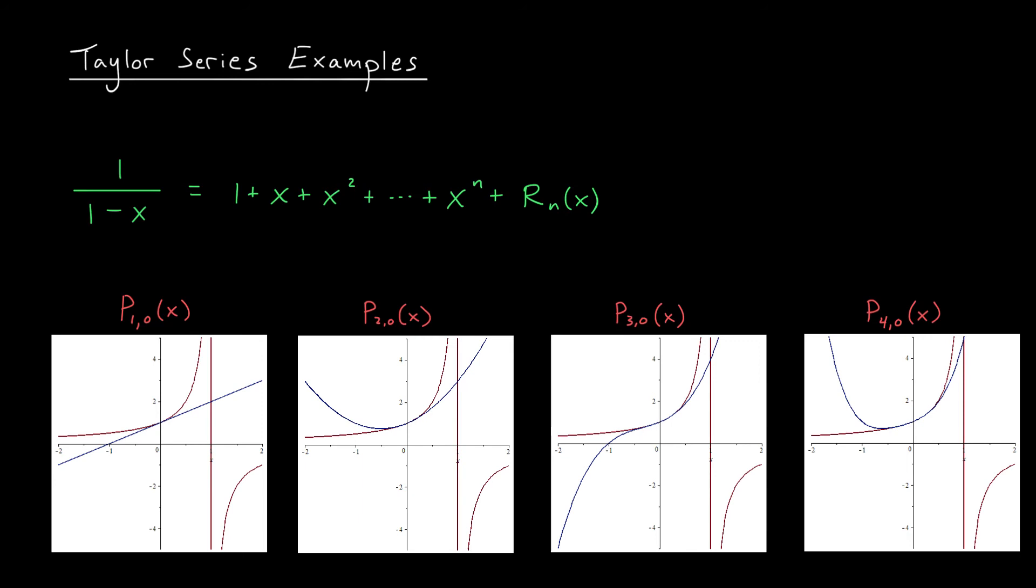For other values of x, though, the story is very different. The Maclaurin polynomials seem to completely ignore the function at values of x bigger than 1, and you might say, okay, it's because of this vertical asymptote. Yeah, but what about the points to the left, between -2 and -1? Here, the approximation's not too bad, but it actually gets worse as we increase the degree. Note that unlike the cosine function, the derivatives of this function are not nicely bounded near x equals 1, so we can't use the same little trick that we did a couple slides ago to show that the remainder term tends to 0.